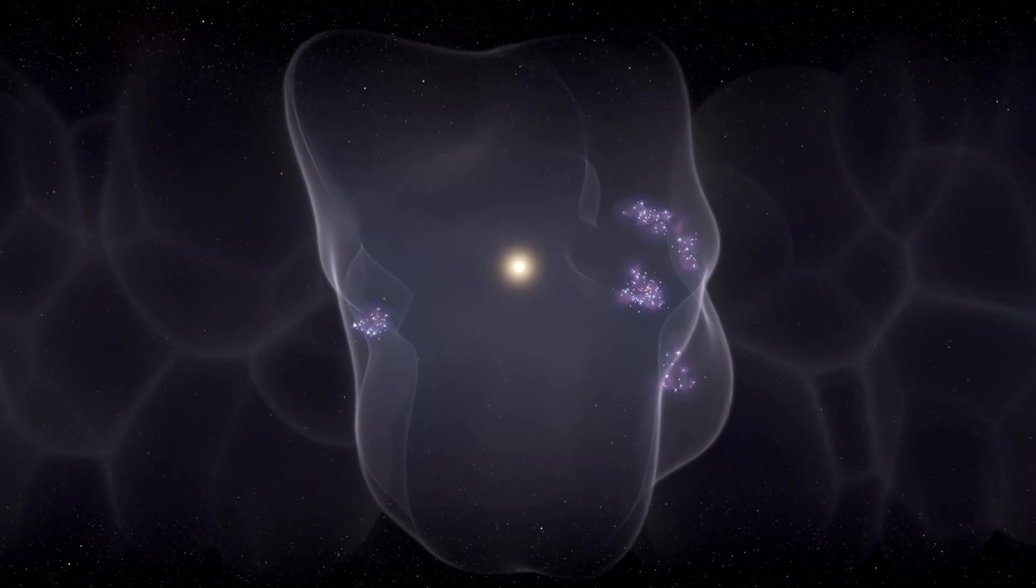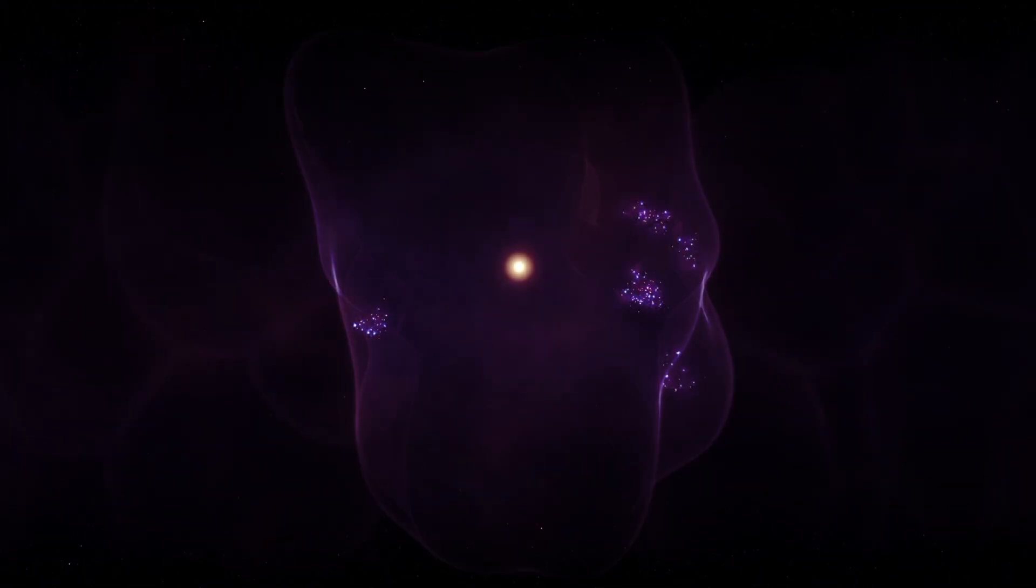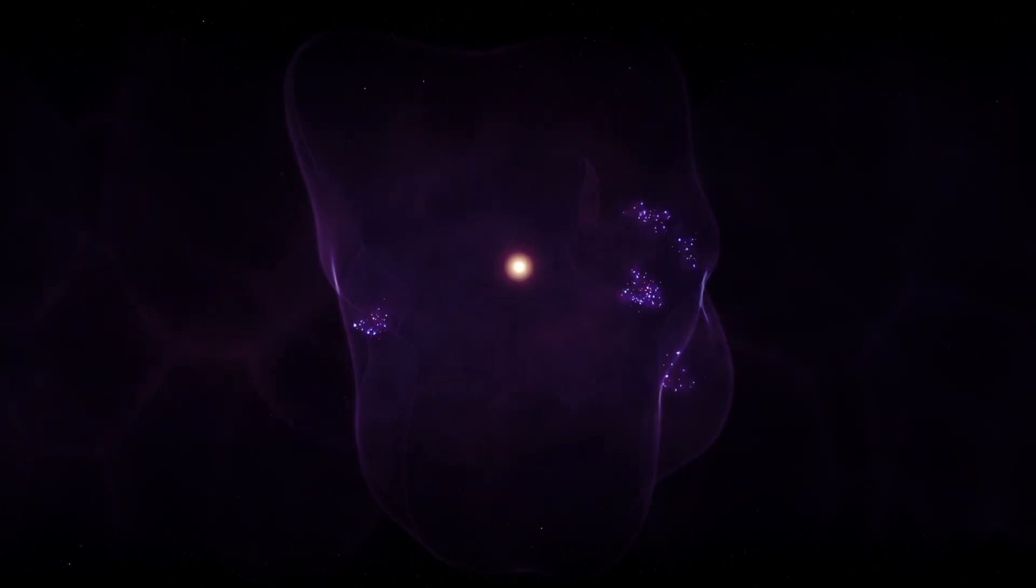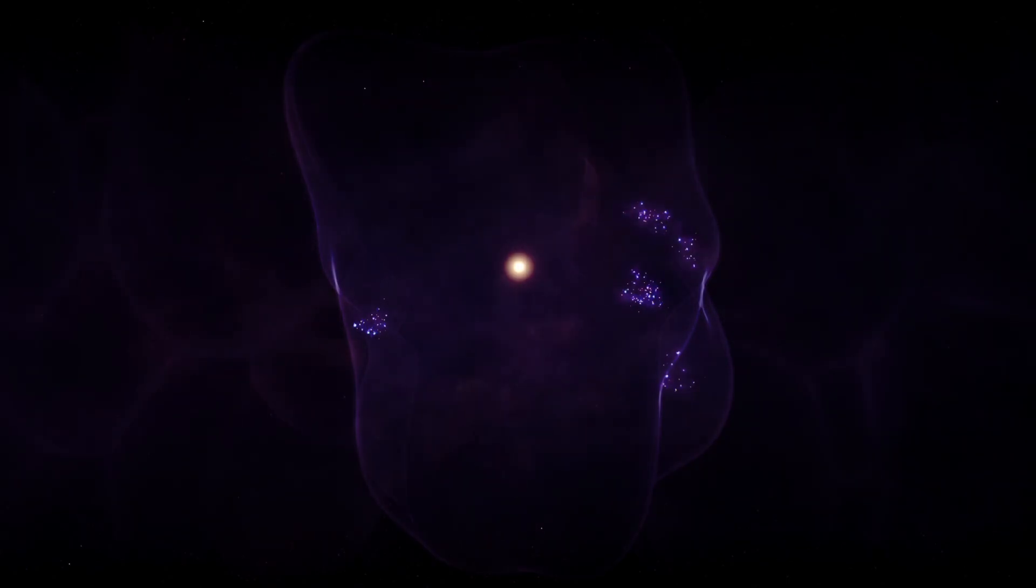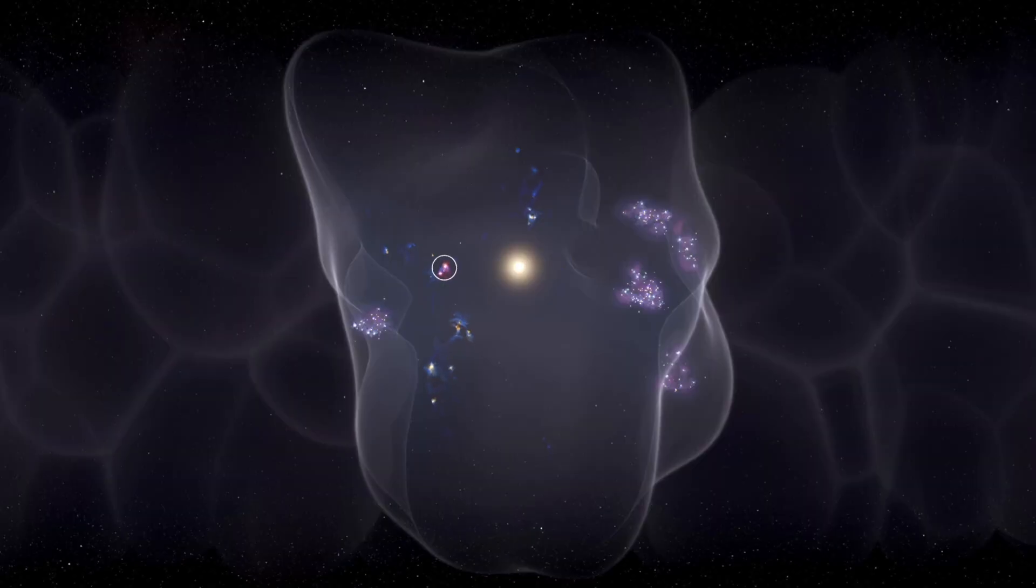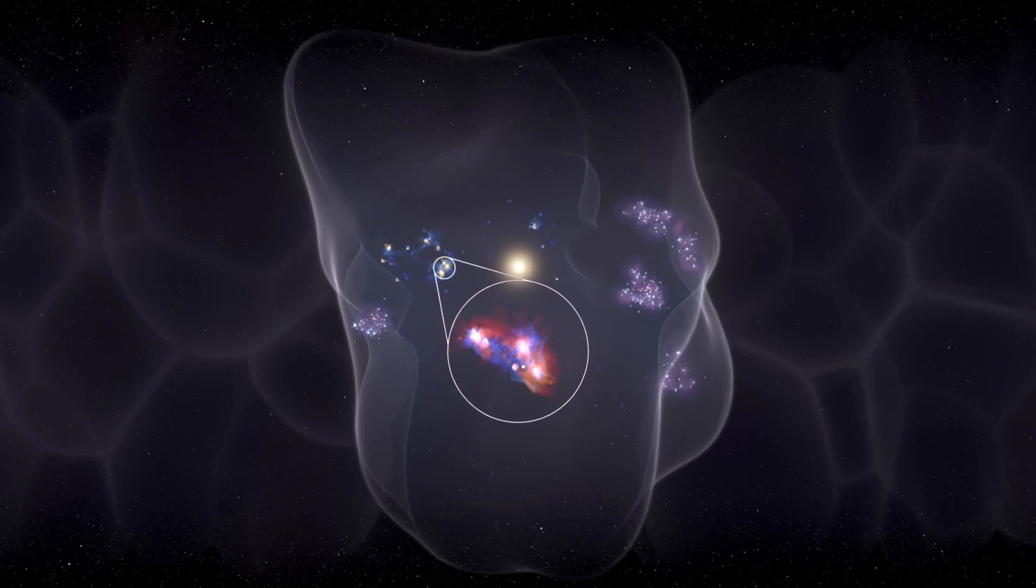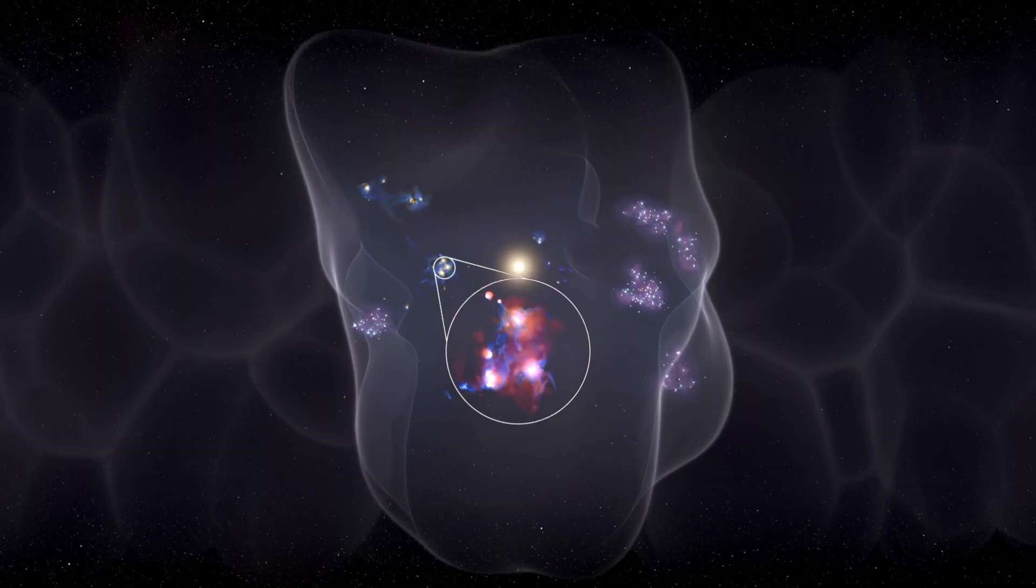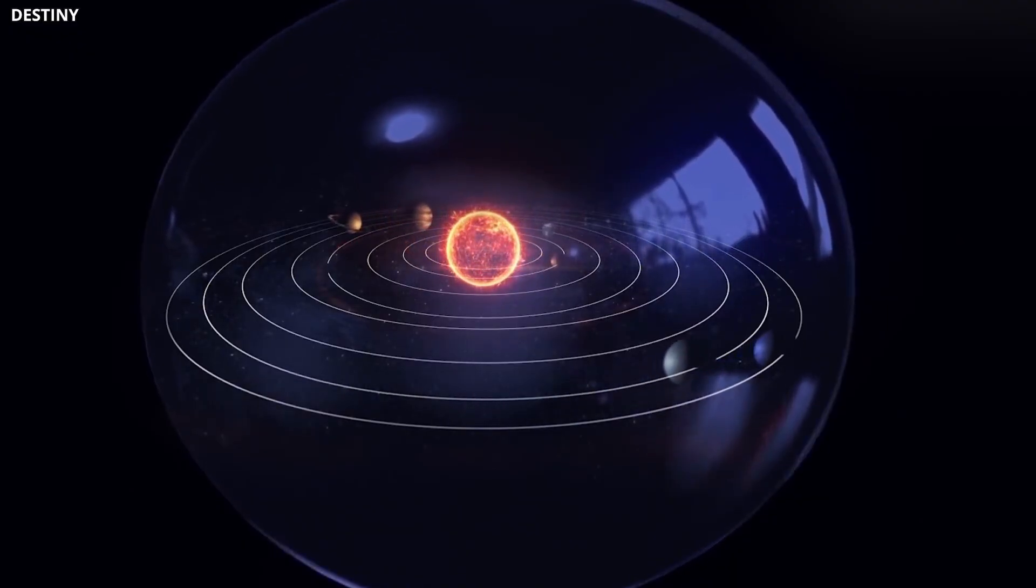However, even though the gas inside the bubble is so hot, it's also very low in density. In fact, the density of particles within the local hot bubble is thousands of times lower than the density of air on Earth. This means there are very few particles in the space within the bubble. And because the gas inside the bubble is so sparse, this high temperature doesn't directly affect objects within it, including our solar system.